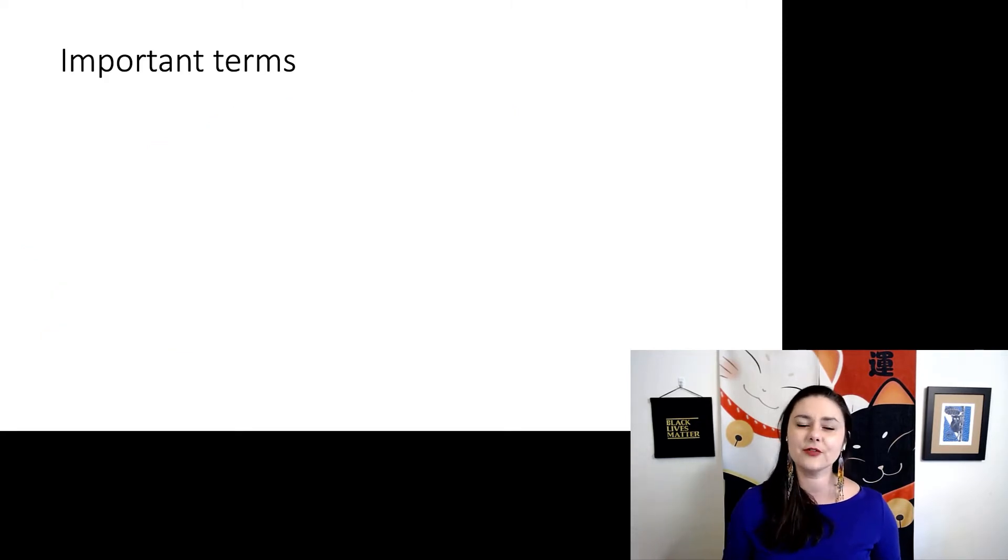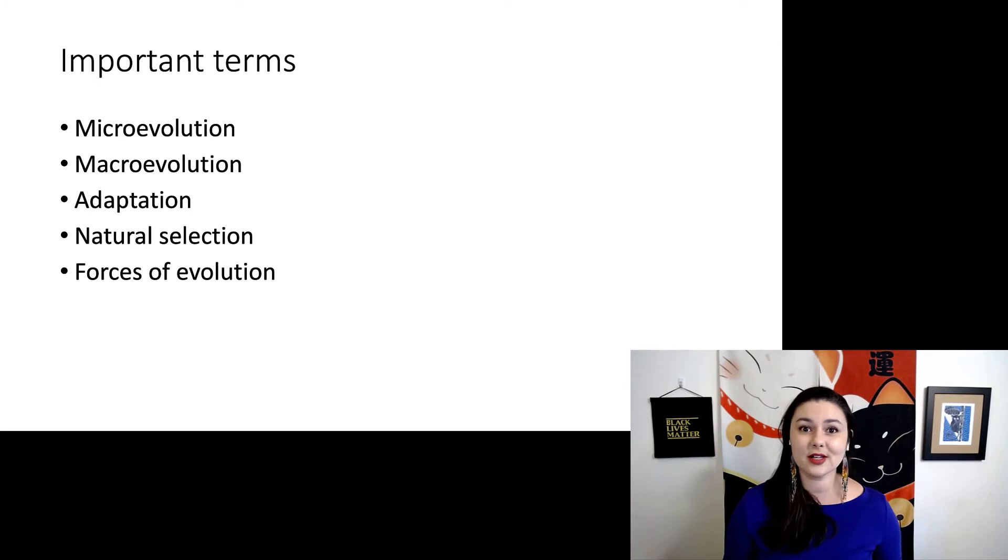There's also a few important keywords that you want to be aware of and paying attention to when you learn about evolution. There are microevolution and macroevolution. Micro means small. Macro is large. So we think about evolution slightly differently depending on the timescale. There's different things we talk about and notice when we're talking on the micro or small level versus the macro or large level. It's also important to think about adaptation, natural selection, and the forces of evolution. By the end of this unit, make sure you can define all of these terms.